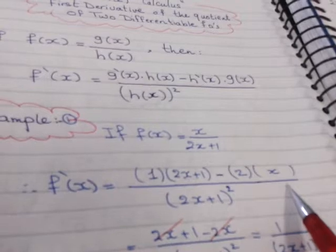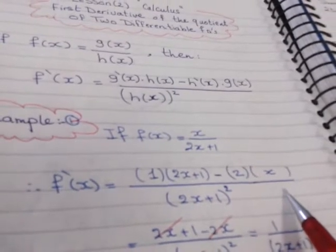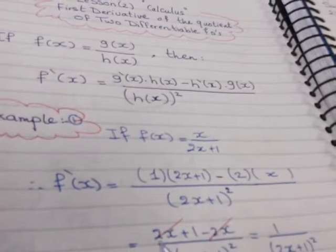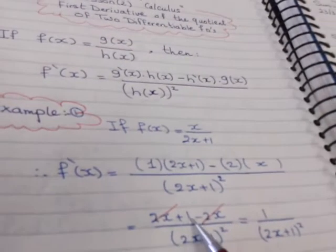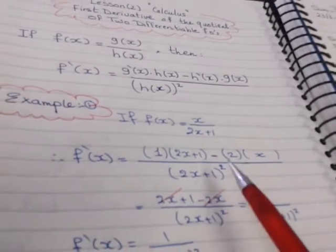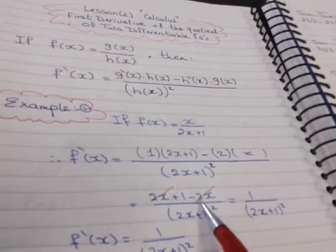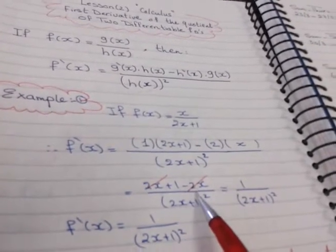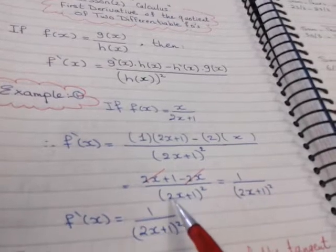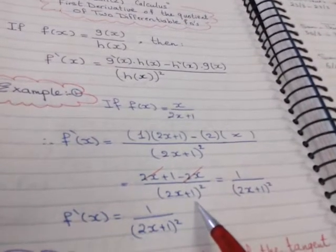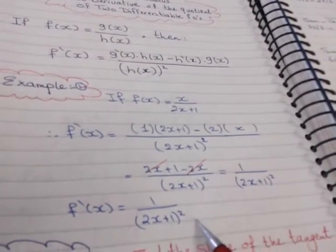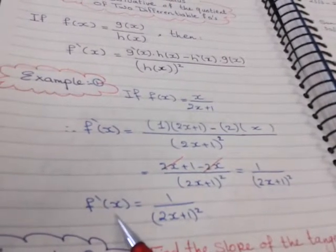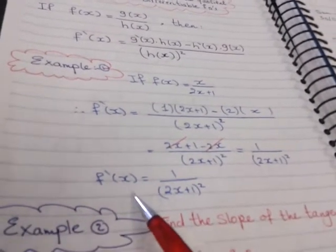After simplifying, the numerator becomes 1 times (2x plus one), which is 2x plus one, minus 2 times x, which is 2x. Canceling 2x with negative 2x gives 1 over (2x plus one) squared. This is the simplest form of f-dash of x, the first derivative.